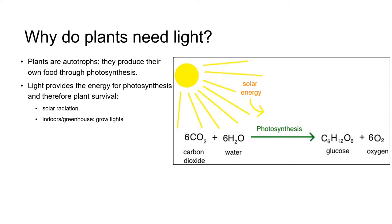Outdoors the light source is solar radiation from the sun. Indoors in a greenhouse or other crop production structure, solar radiation is supplemented or replaced altogether sometimes by different types of electrical lights such as high pressure sodium lights or LED lights.